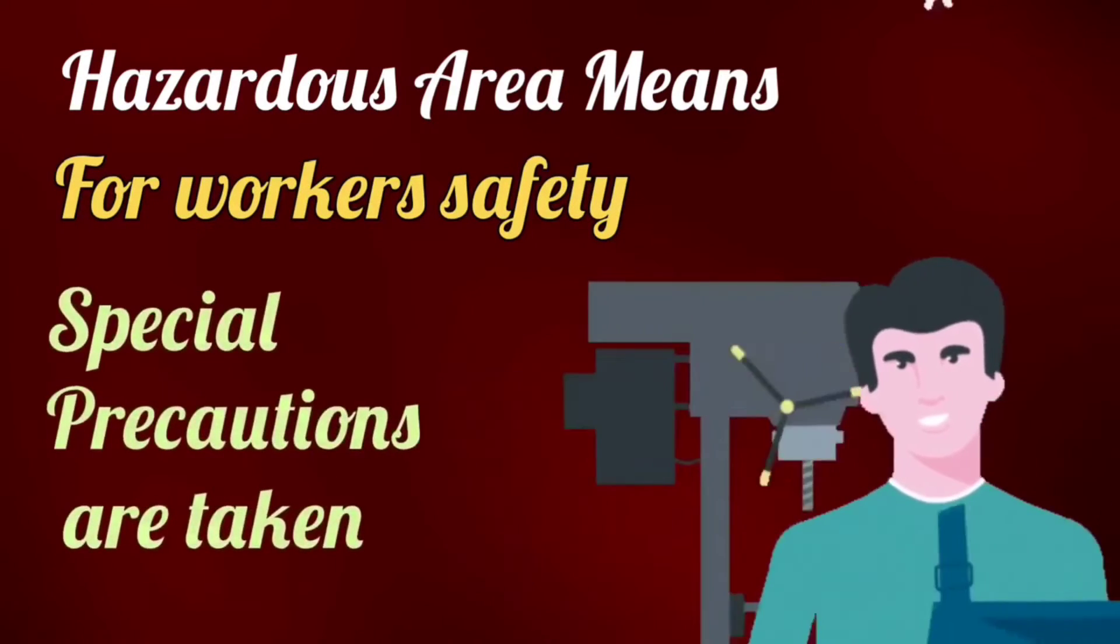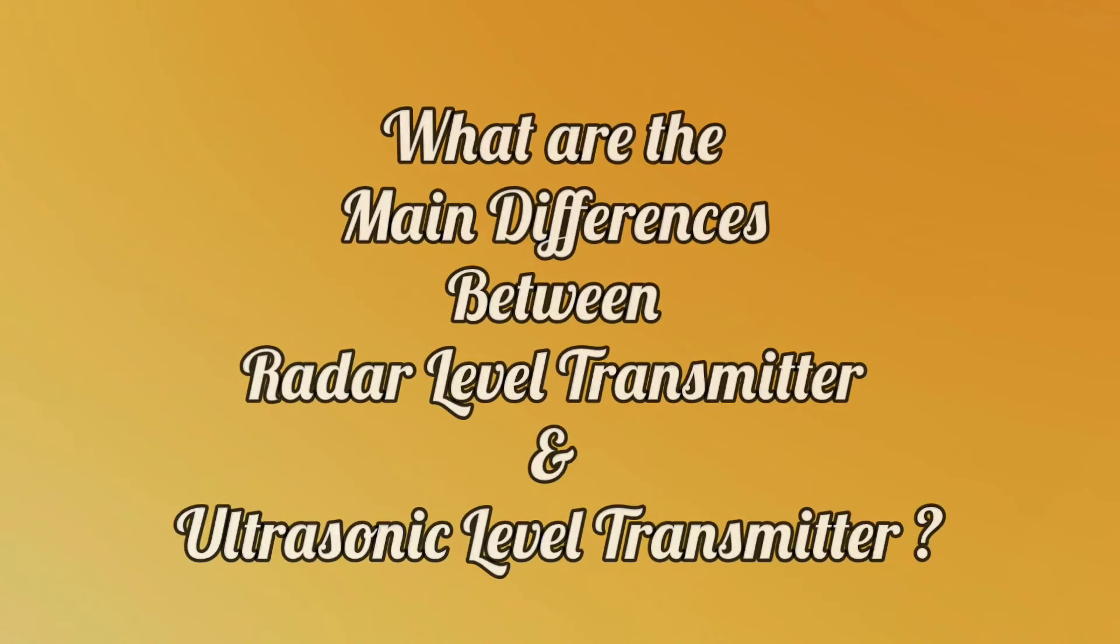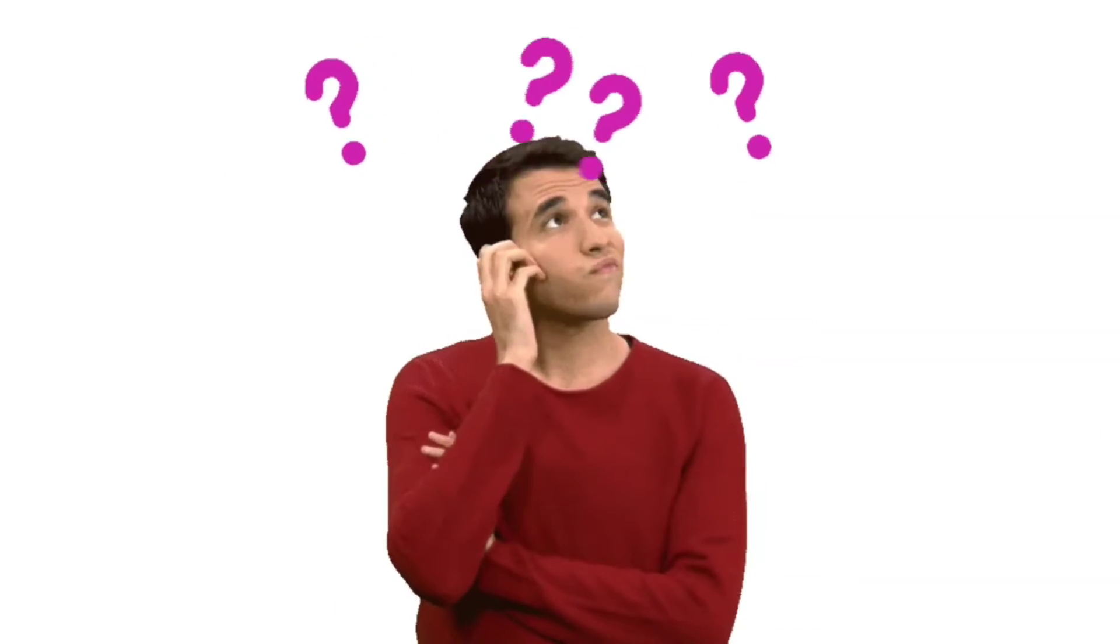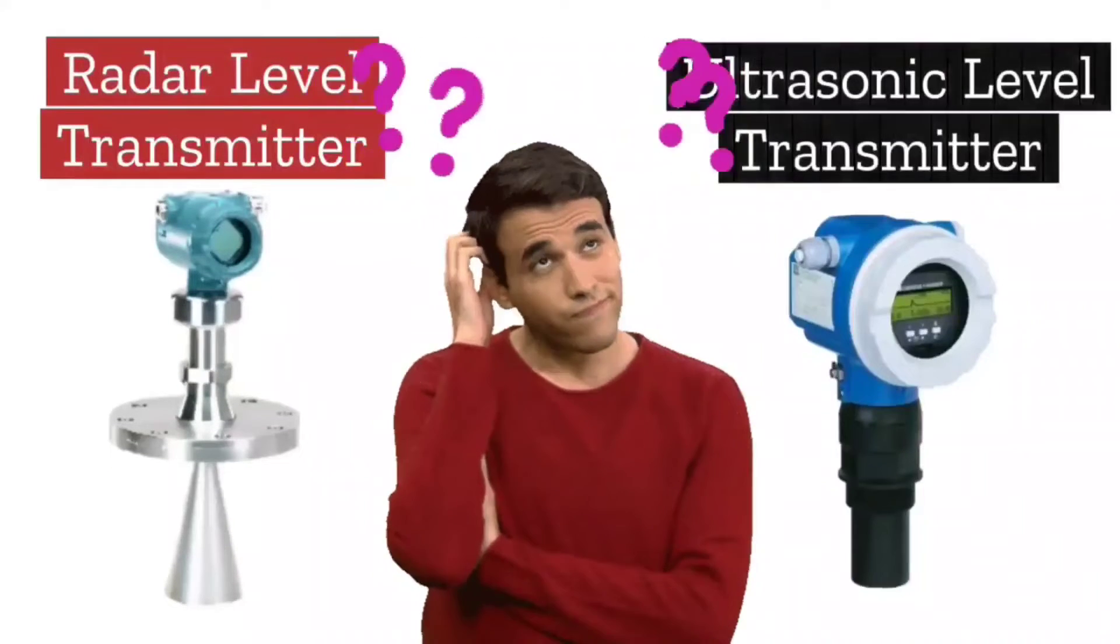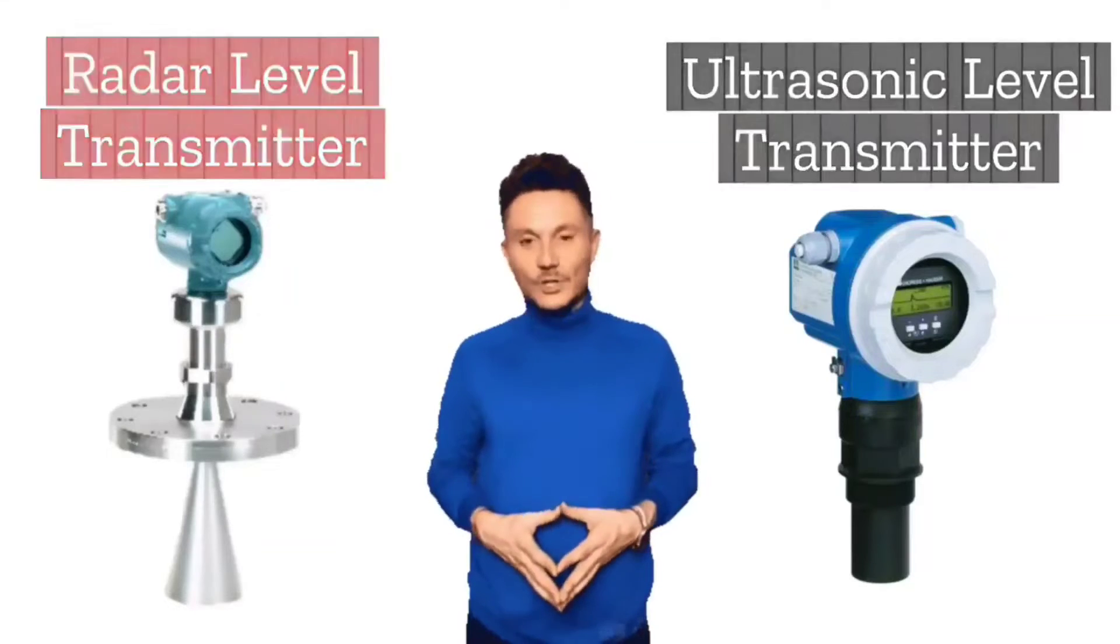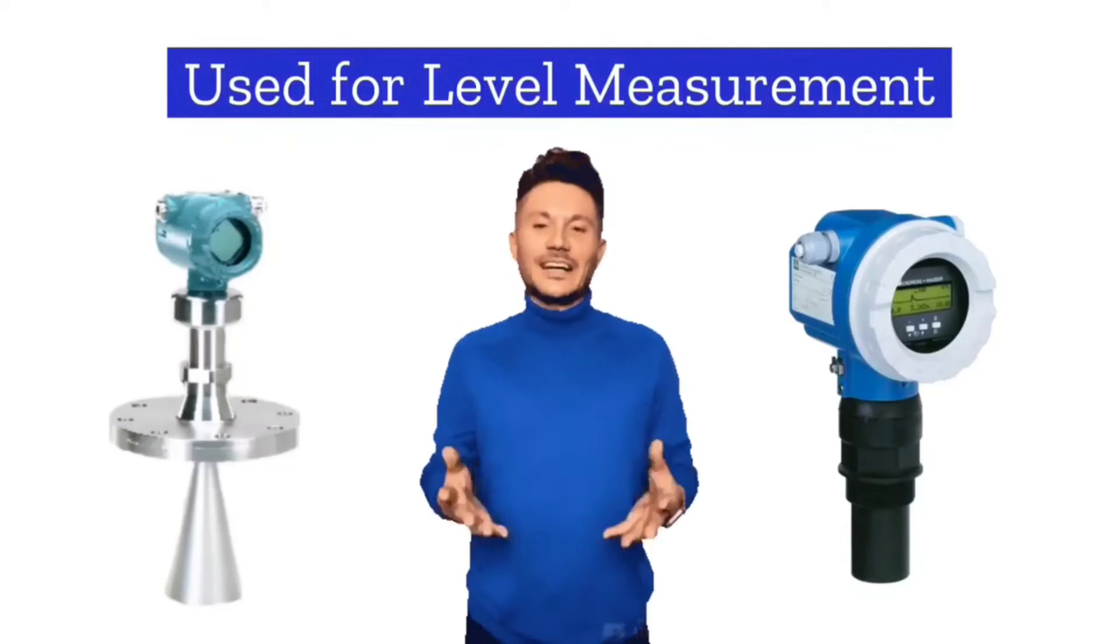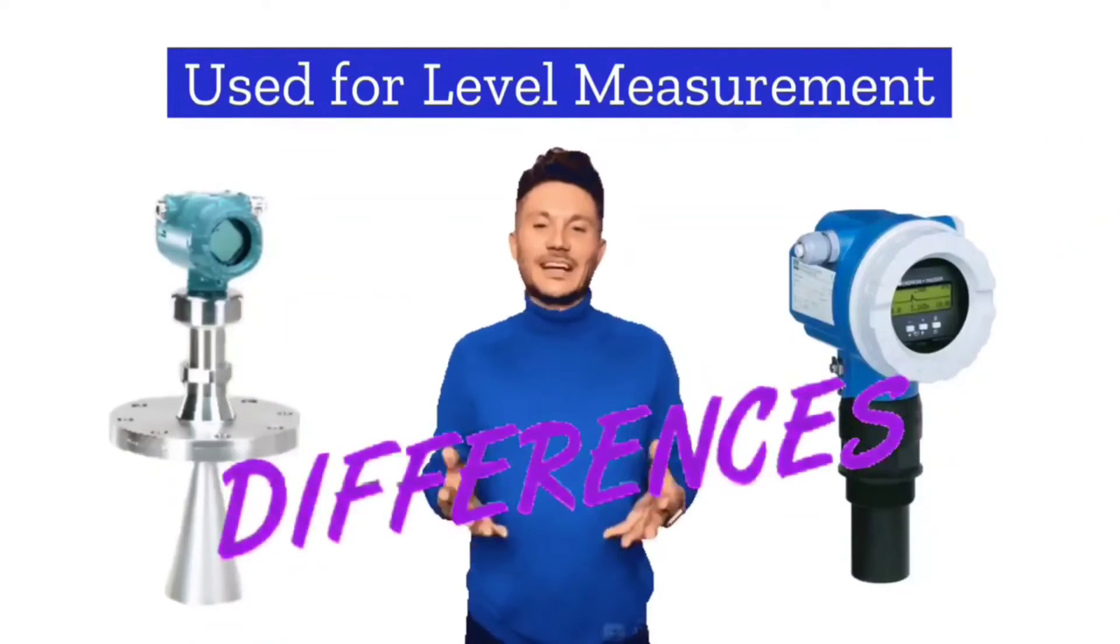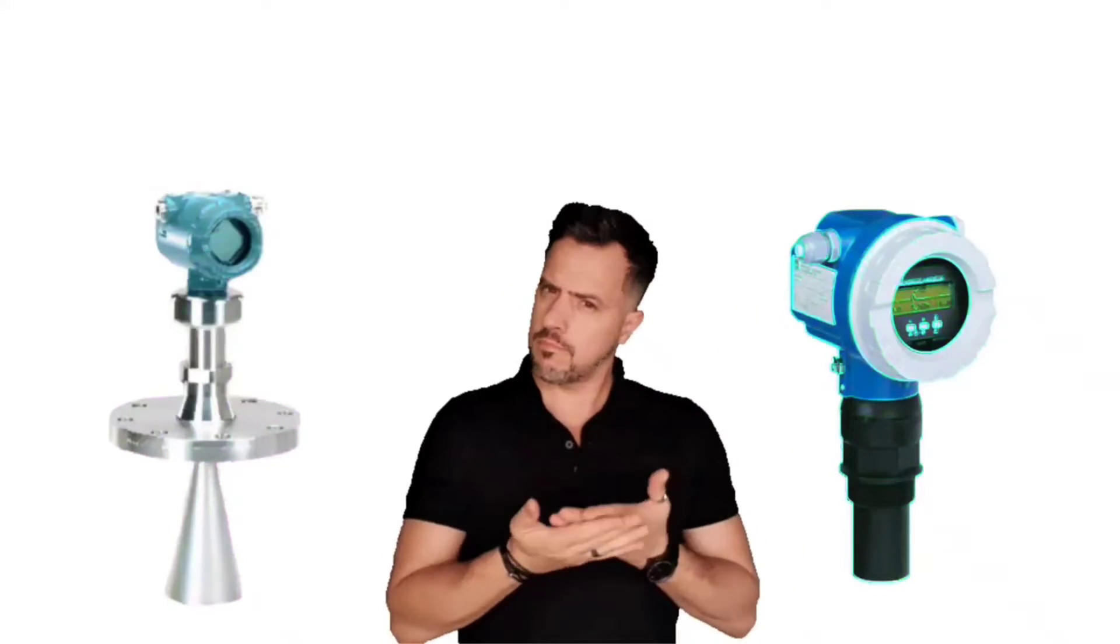The next question is: What are the main differences between radar level transmitter and ultrasonic level transmitter? Radar level transmitter and ultrasonic level transmitter are both the same type of equipment used for level measurement, but they have some differences. Here I will tell you some of the main differences between a radar level transmitter and an ultrasonic level transmitter.